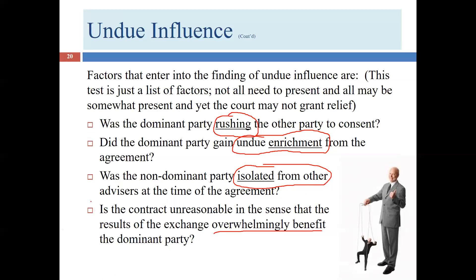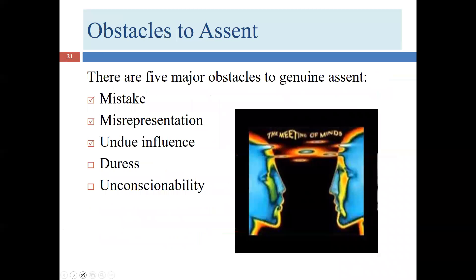For an undue influence claim, we don't have to prove fraud. We don't have to prove Nurse lied or even accidentally misrepresented facts — it's possible she was completely truthful and still committed undue influence. Now we're going to move on and talk about duress, which is probably the most straightforward of these situations.